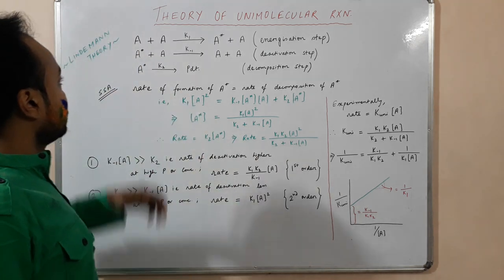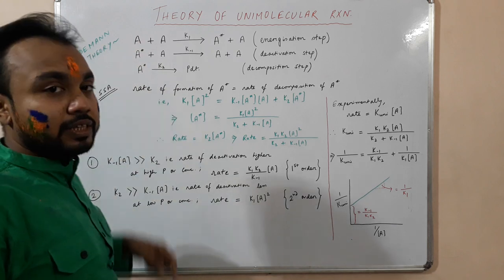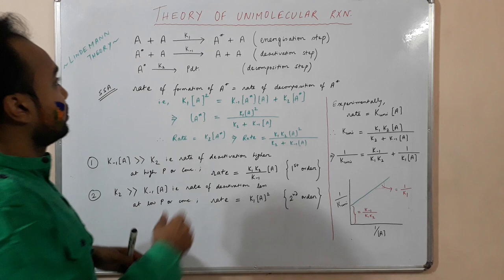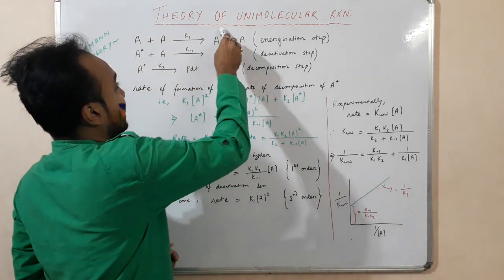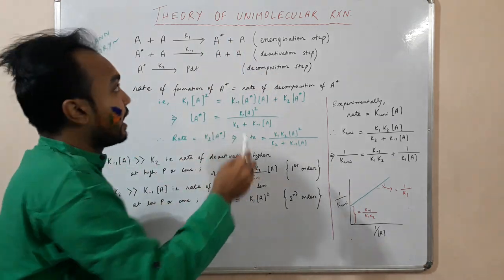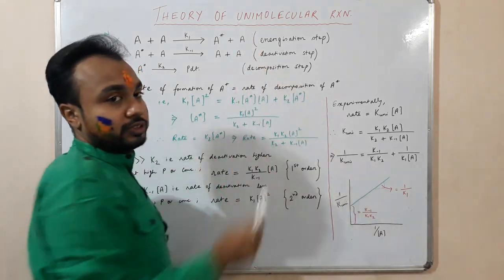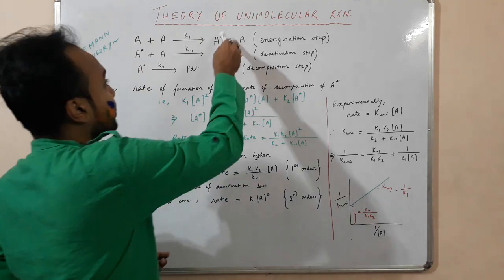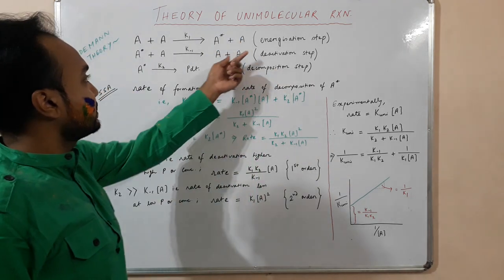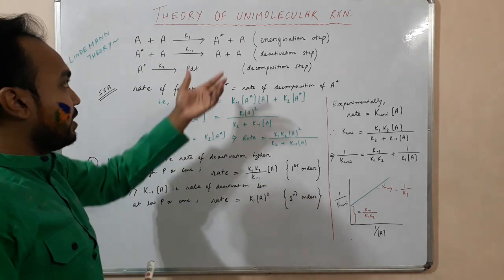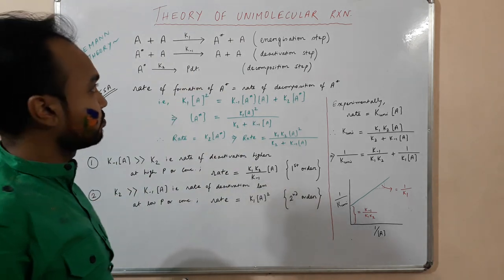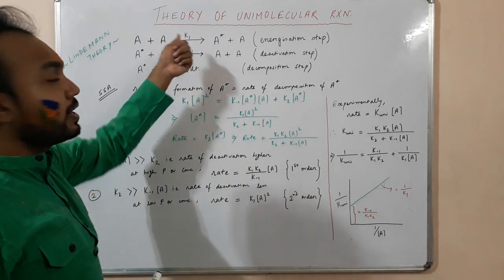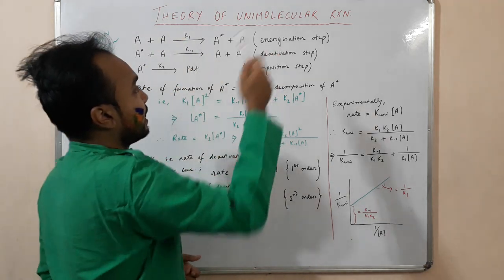So what happens here? A molecule A collides with another molecule of A. Some of the A molecules get energized or activated, and some remain in the ground state. There is a collision between molecules of A to form some activated A* species as well as some non-activated species. This step is the energization step, and K1 is the rate constant for the energization step.